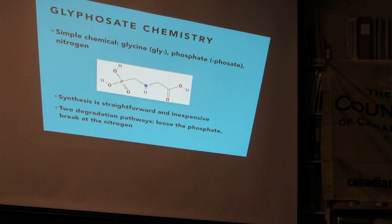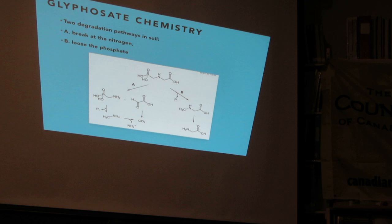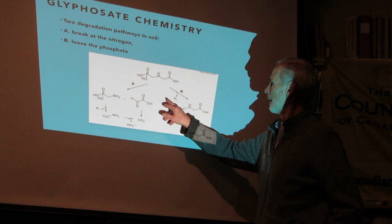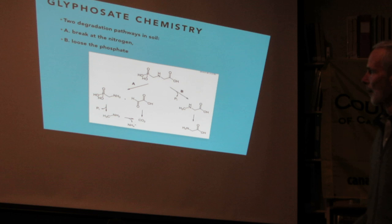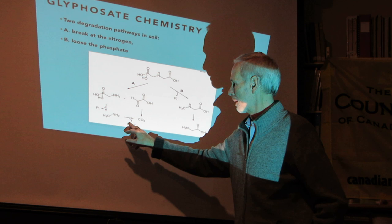Glyphosate has two ways of breaking down in the environment or in the body. One is to lose the phosphate — you can see the inorganic phosphate (Pi) coming off to make that chemical. The other, more common pathway is where it actually breaks at the nitrogen in the middle, making two products that both end up as free phosphate, a little ammonia, and carbon dioxide — all harmless chemicals.